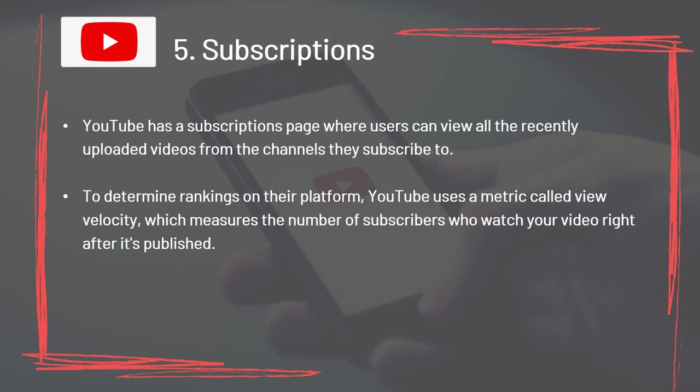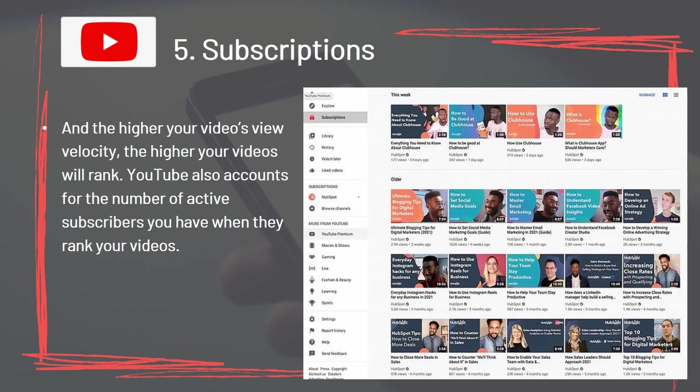Section 5: Subscriptions. YouTube has a subscriptions page where users can view all recently uploaded videos from the channels they subscribe to. To determine rankings, YouTube uses a metric called View Velocity, which measures the number of subscribers who watch your video right after it's published. The higher your video's View Velocity, the higher your videos will rank.